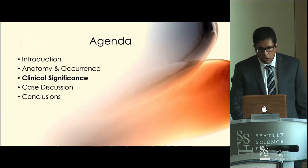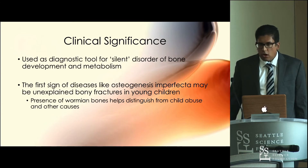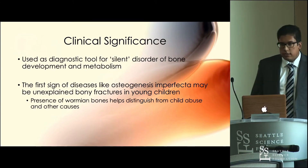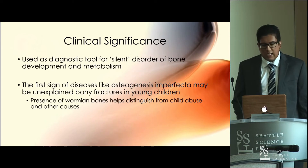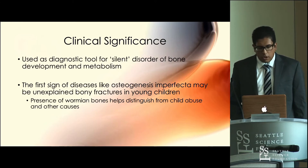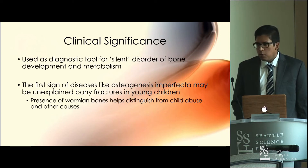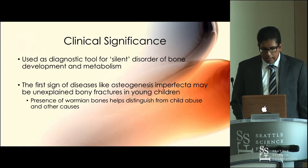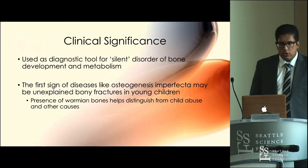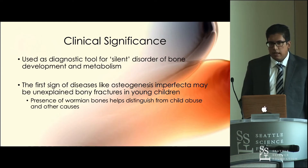Wormian bones don't really cause a lot of symptoms. Their greatest clinical utility comes from the fact that they can suggest other underlying disorders. They are used as a diagnostic tool by pediatricians and pediatric neurosurgeons as a silent marker or indicator for other disorders of bone development and metabolism. For a disease like osteogenesis imperfecta, the presence of wormian bones might help distinguish it from other causes of unexplained fractures, such as child abuse or other disorders of bone metabolism and mineralization.